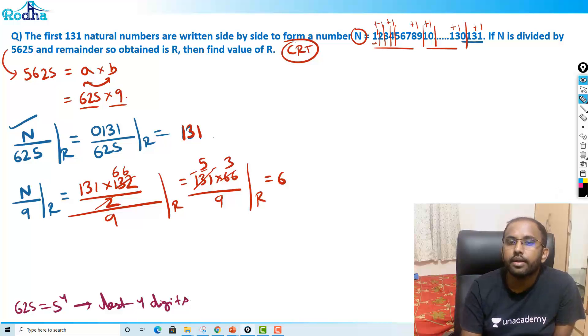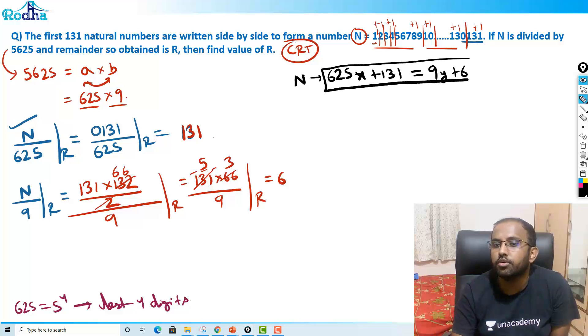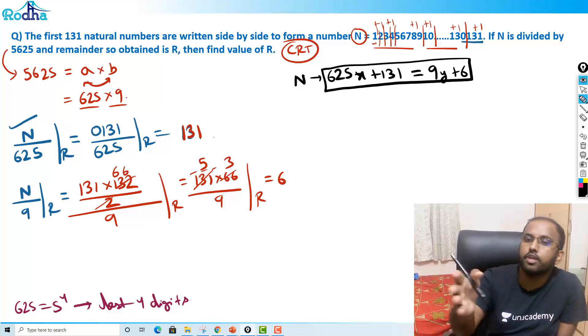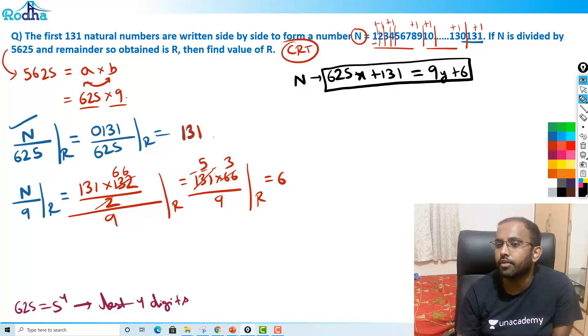So here I got remainder 131, here I got remainder as 6. What I will do now? I know. So that means we will write in this format: a number when divided by 625, remainder is 131. The format is: number is of the form 625x + 131. Same number when divided by 9, remainder is 6, that is 9y + 6. By Chinese Remainder Theorem, I am looking to satisfy the first value of this expression. That will be the answer.